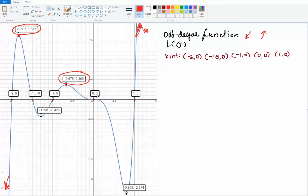It's coming down, and that's not really a maximum, that's more like a flat area in the curve. So then I would ask you to report the maximums. The first relative maximum would be negative 1.837, 1.617. The other one occurs at negative 0.675, 0.366.